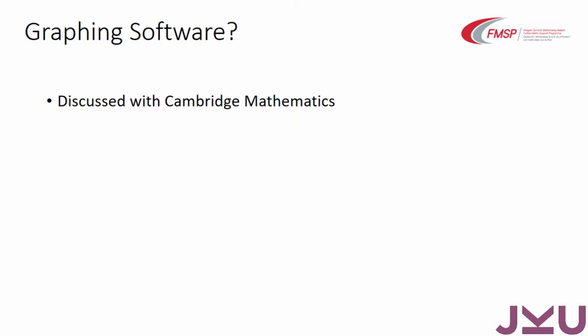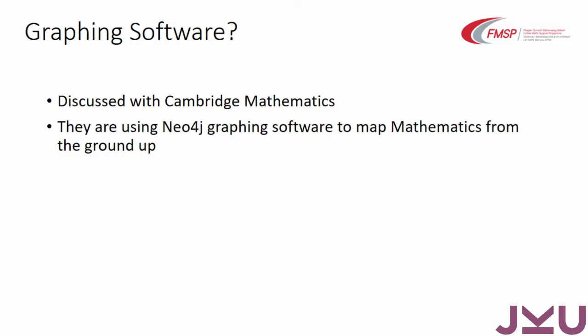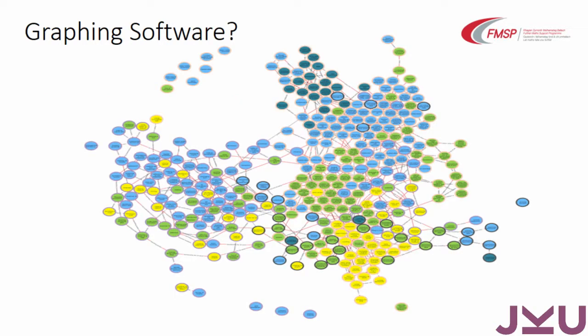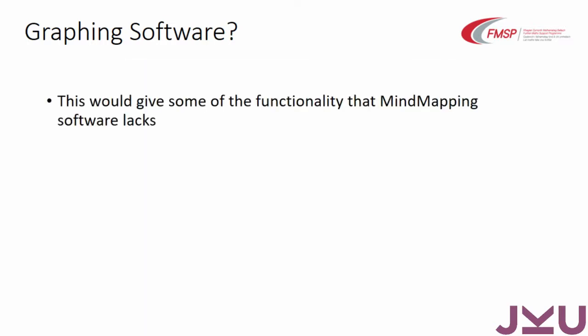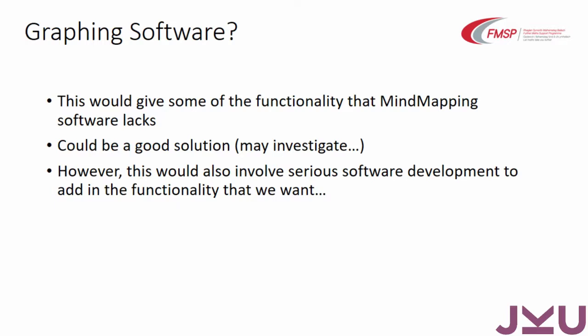One possibility was graphing software. I discussed this with Cambridge Mathematics, who are doing a project similar to this map but starting from age zero upwards. However, they're using a particular graphing software which looks legible when you zoom in — but it would lack some of the functionality that mind-mapping gives. Could be a good solution, but one of the problems is you'd have to do some serious, proper software development on the graphing program itself in order to give it the functionality.